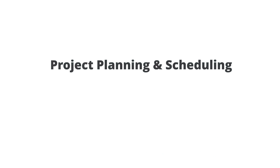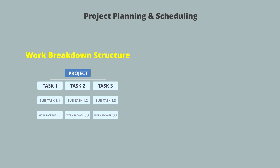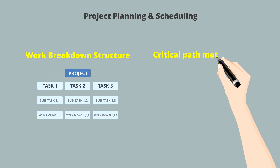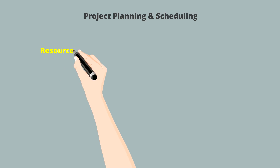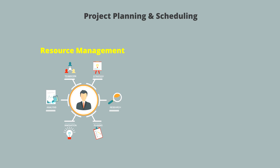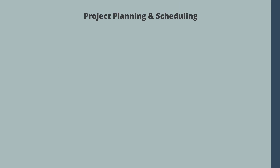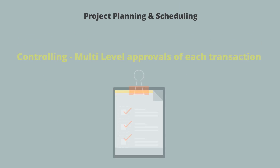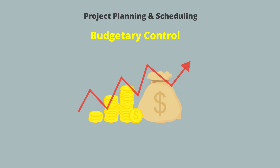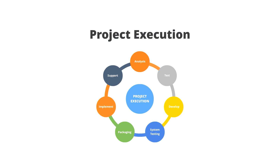Construction Operations includes: Project Planning and Scheduling, Work Breakdown Structure, Critical Path Method (CPM), Resource Management, Resource Leveling, controlling multi-level approvals of each transaction, and Budgetary Control.